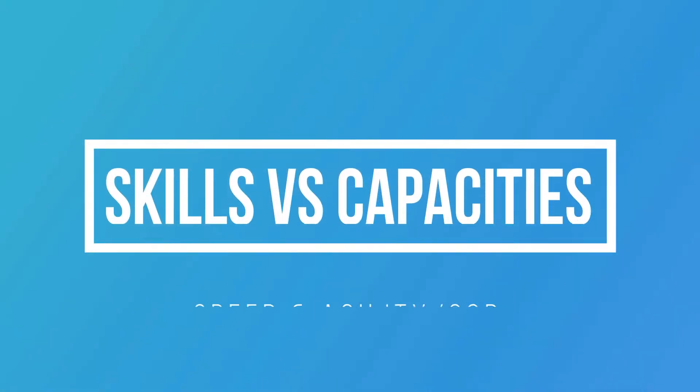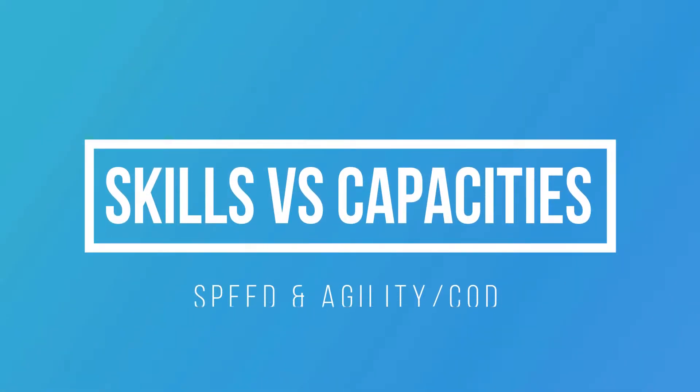Hi everyone, welcome to my third blog on skills versus capacities in speed, agility, and change of direction. In this vlog I will analyze a skill and capacity deficient speed drill, the flying 10 meter sprint, and a change of direction drill, the 505.